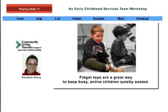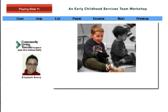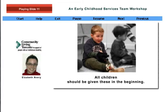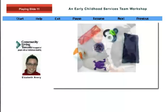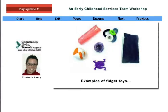Some children may be able to focus if their hands are busy squeezing or twirling a fidget toy. All children should be given these in the beginning, and you will probably find that only those children who really need this assistance will continue to hold them. Examples of these toys include soft ponytail elastics, finger rattles with the rattle removed, and small animals.